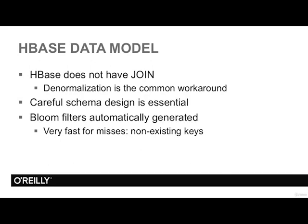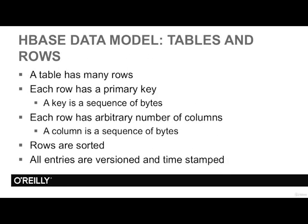You try to avoid any additional work at runtime — anything besides the read is not considered to improve performance. Bloom filters provide very quick responses for misses, so if a key is not in the system, we hear about it very quickly. Tables and rows: a table can naturally have many rows, each with a primary key. HBase is not choosy about keys and data in general — a key is just a sequence of bytes. For a row, we can have an arbitrary number of columns, and a column is also just a sequence of bytes. HBase has no notion of data structures or primitive types. Internally, rows are sorted, and all data is versioned and timestamped.